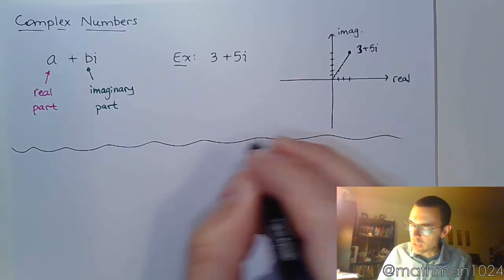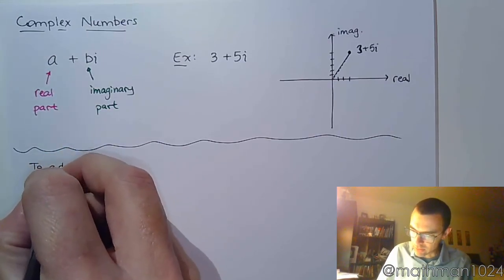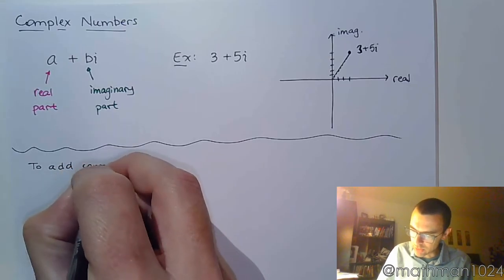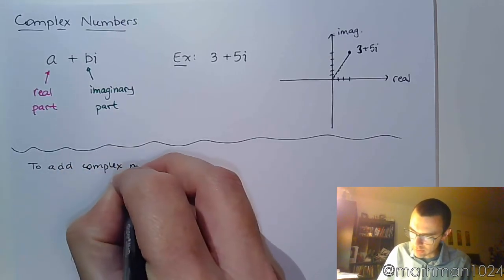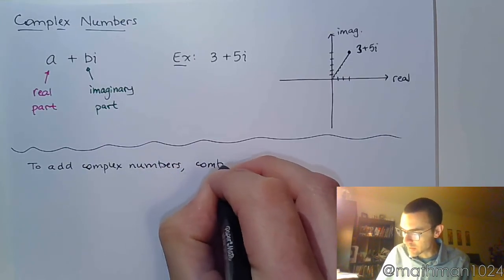All right, so let me make it very simple. In order to add complex numbers, combine like terms.